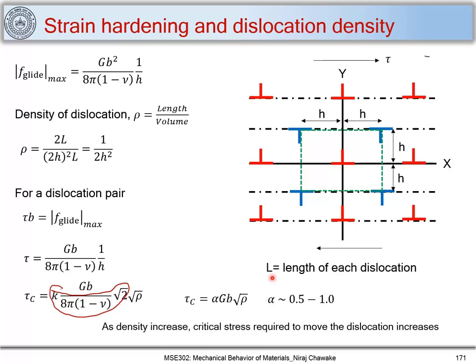Thus, as the density of dislocations increases, the critical stress required to move the dislocations also increases. τ_c is directly proportional to √ρ, so as dislocation density increases, τ_c increases. This is the origin of strain hardening.